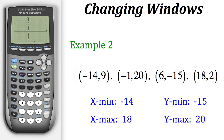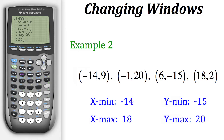Now we can see all four points, but they're hard to see because they're right at the edge of the window. To see them more clearly, let's extend the window on all sides. Set x min to negative 20, x max to 25, y min to negative 20, and y max to 25.